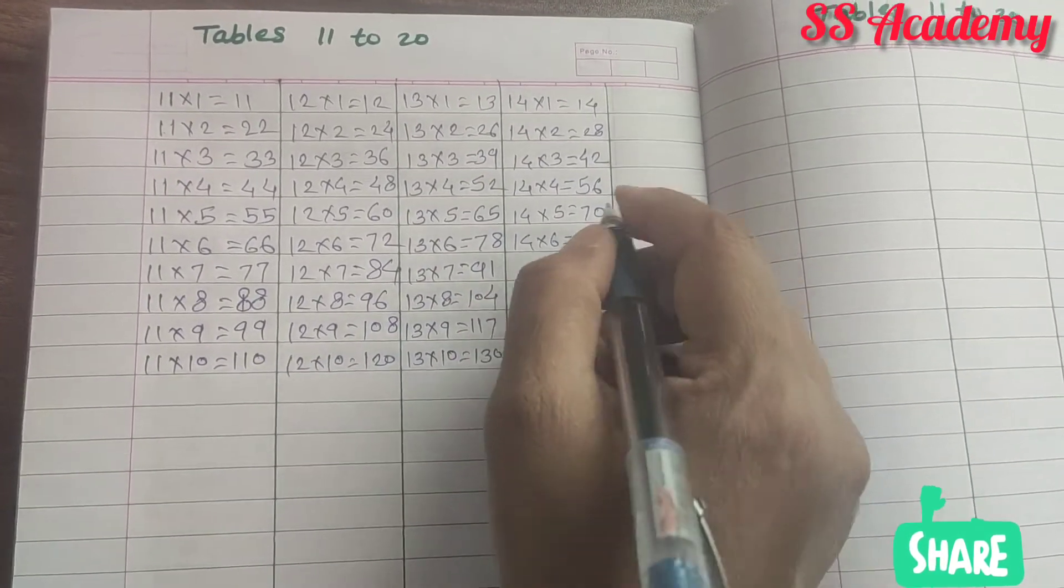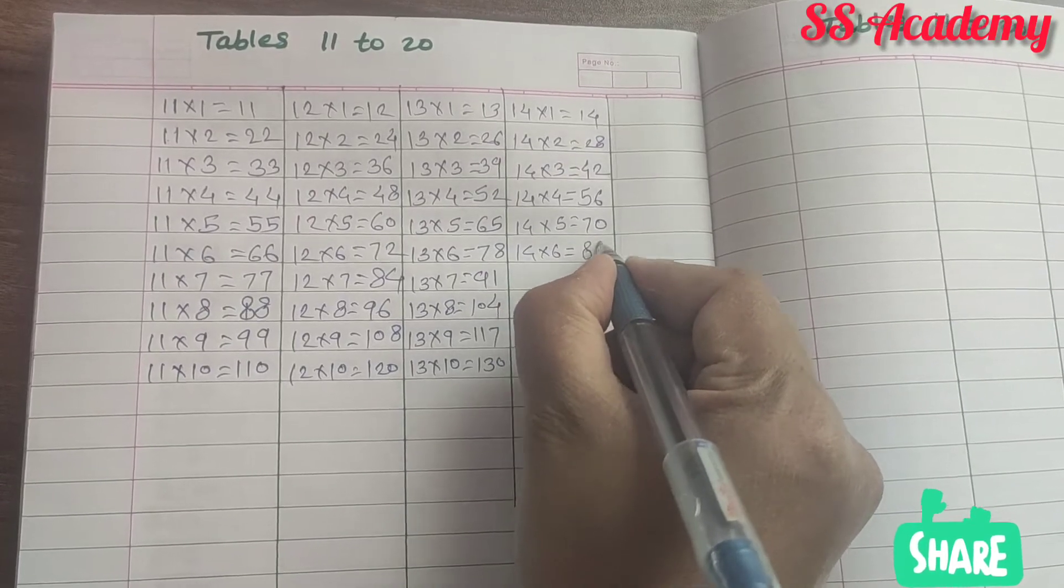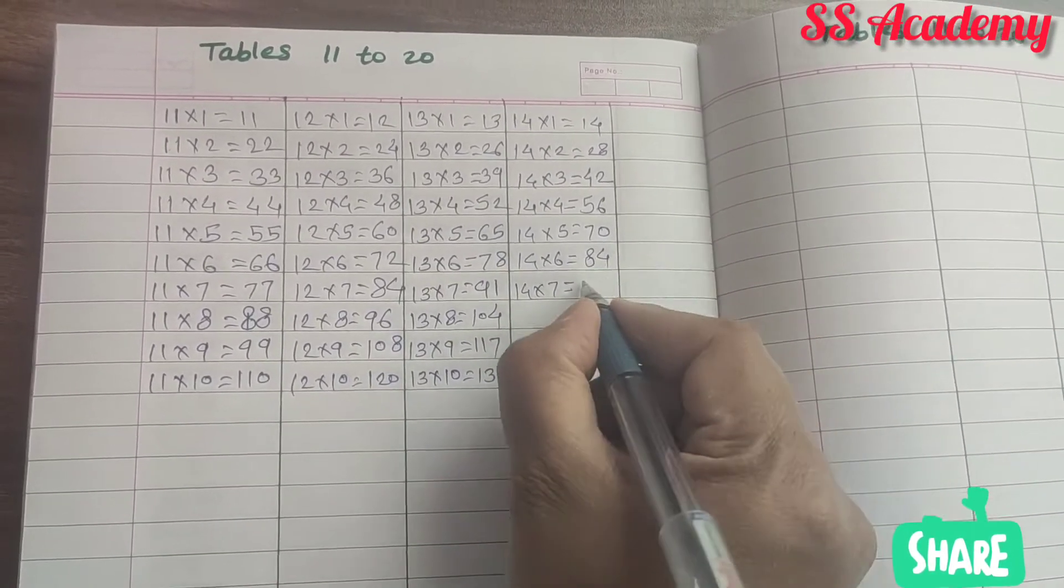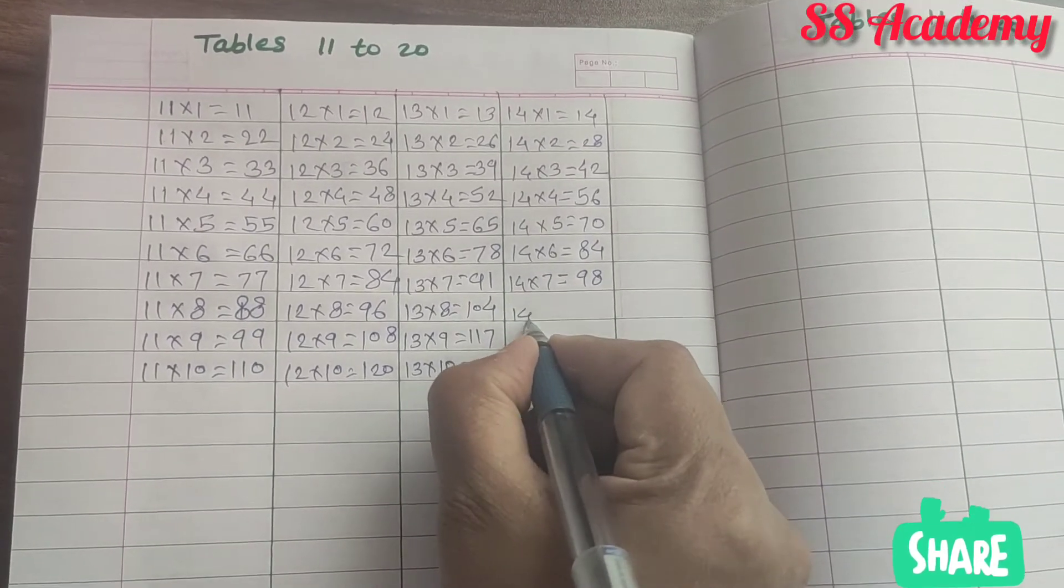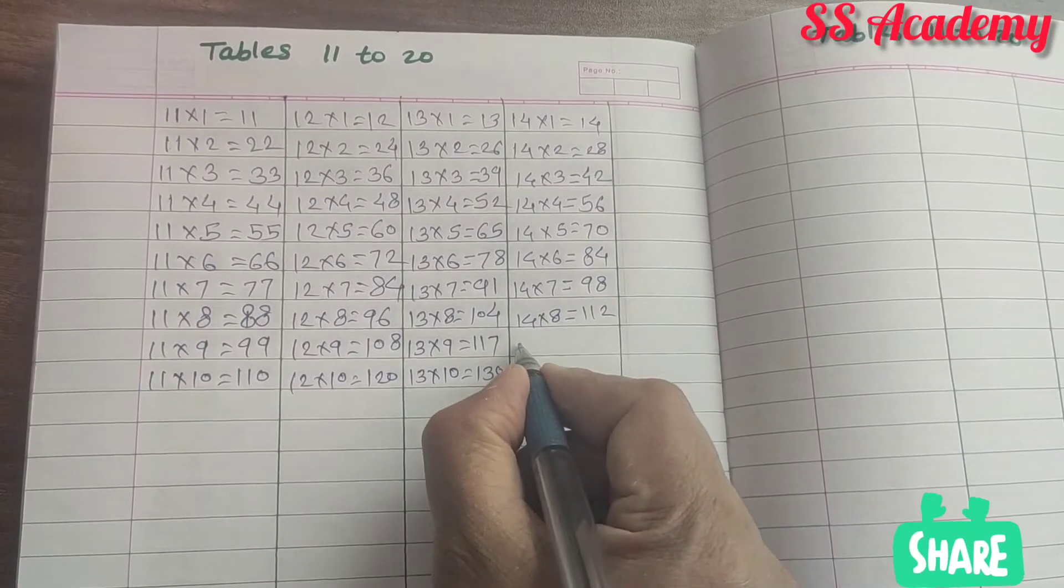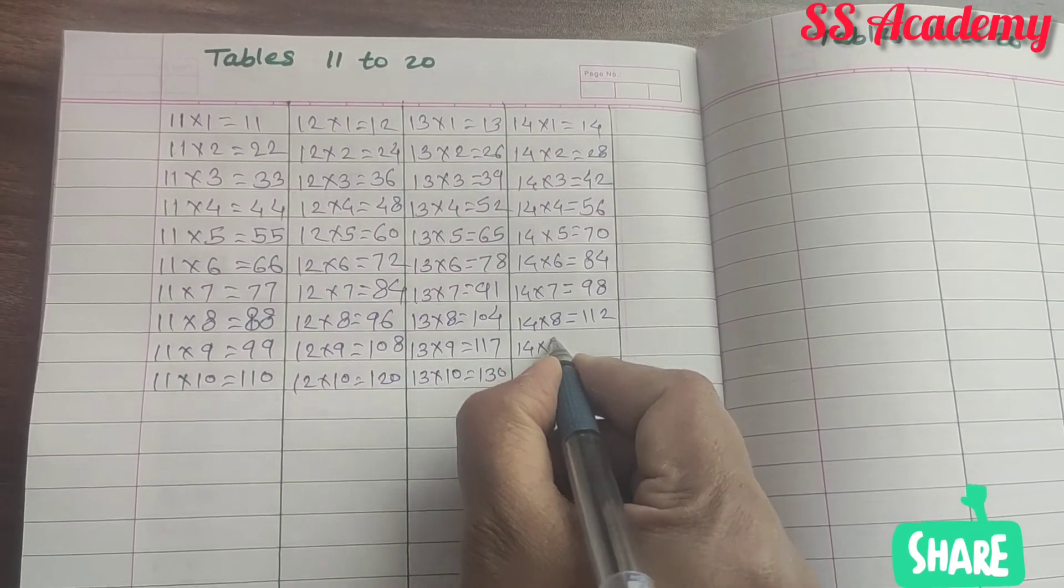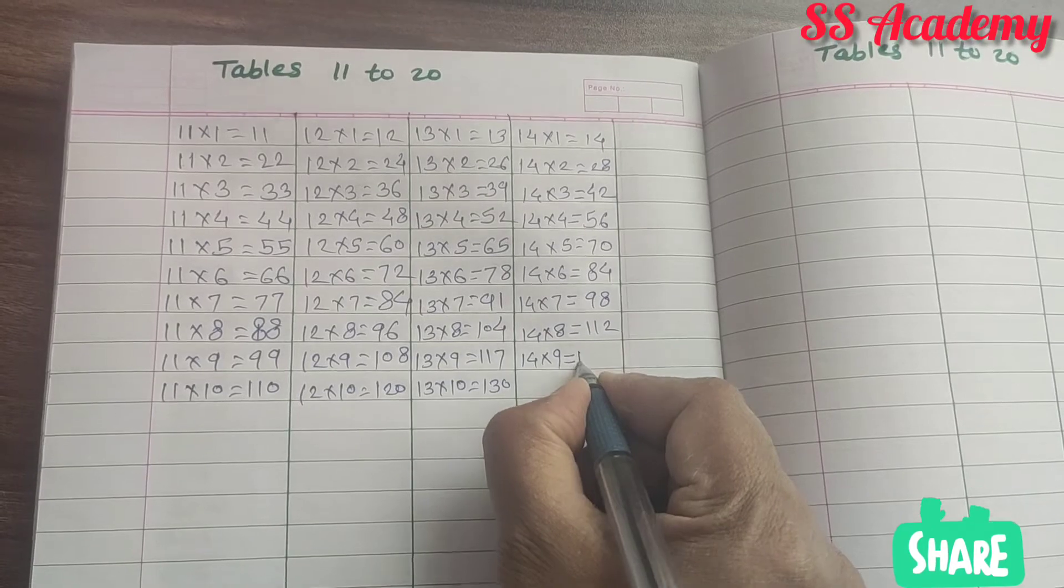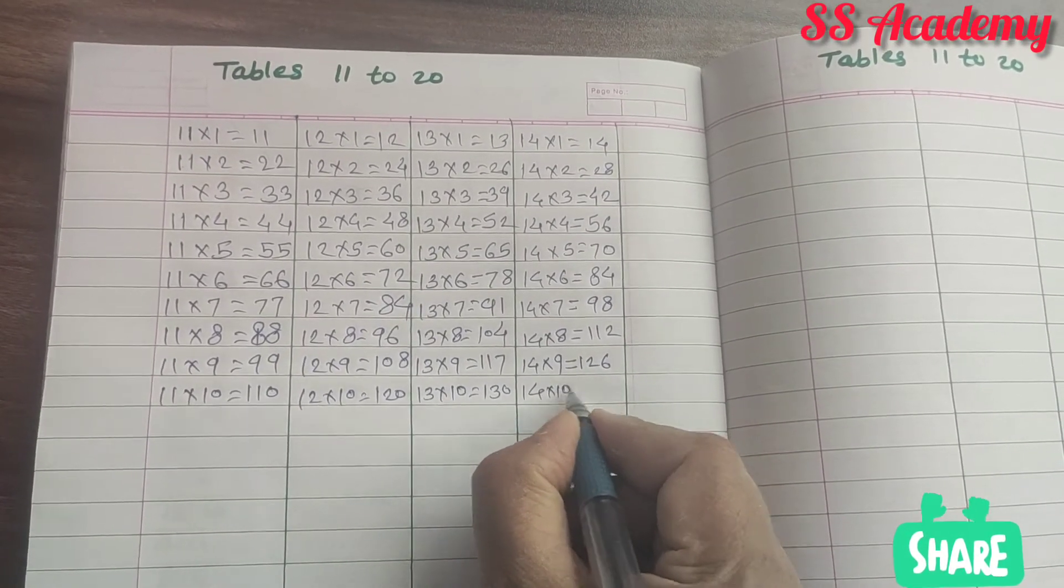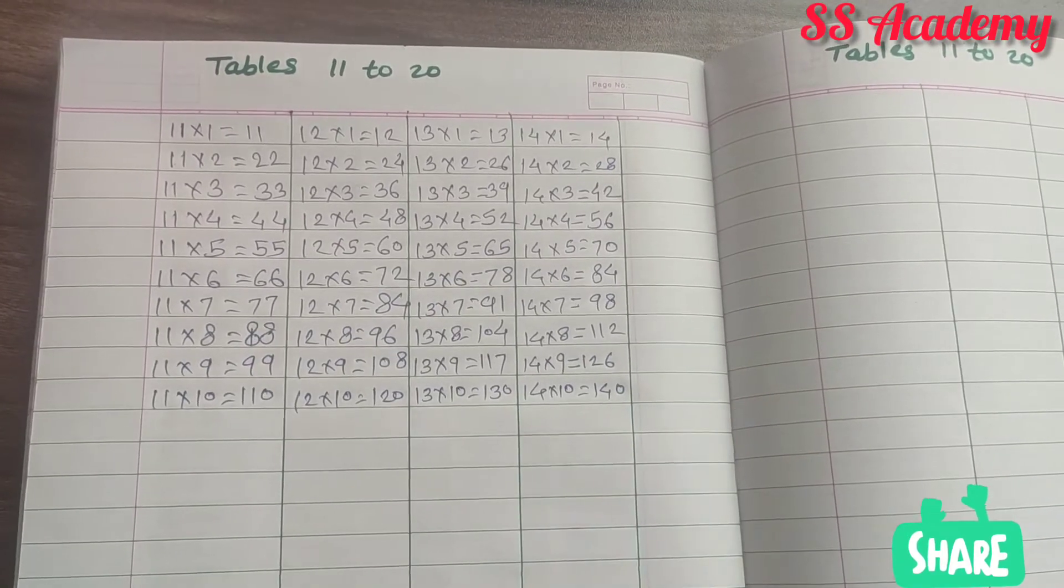14 times 6 is 84. 14 times 7 is 98. 14 times 8 is 112. 14 times 9 is 126. 14 times 10 is 140.